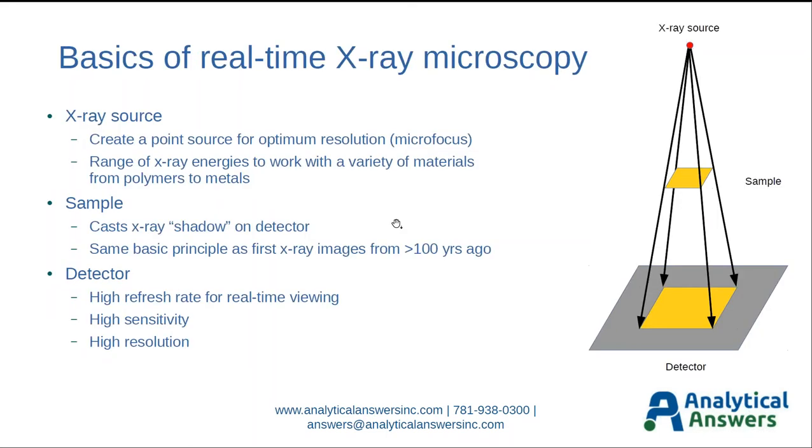The basics of a real-time X-ray microscope really haven't changed much in a long time. Technology has led to incremental improvements. You start with an X-ray source, and what you're trying to do is create a point source, a micro-focus spot, so you have the highest resolution in your image possible. By having the X-rays come from a single point, then you have sharp edges in your images.